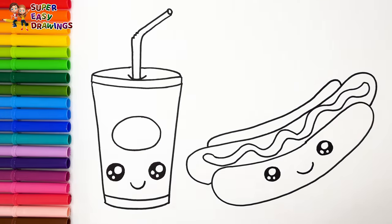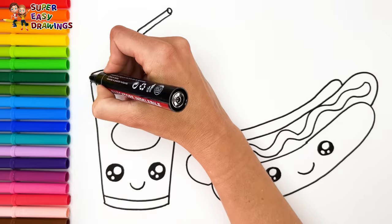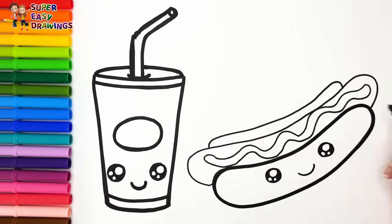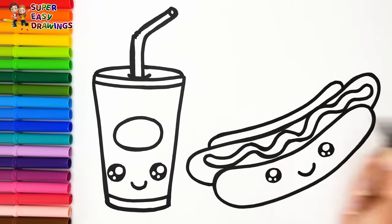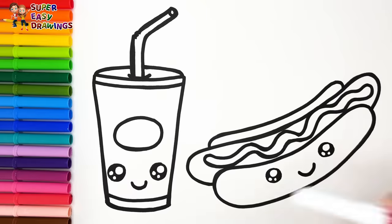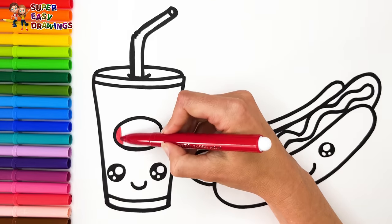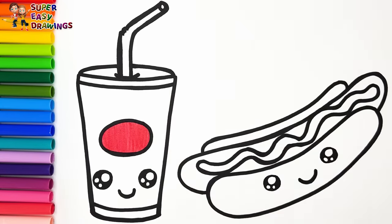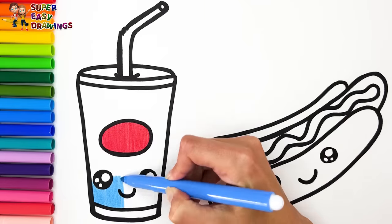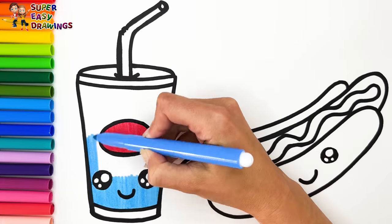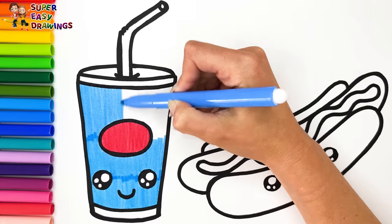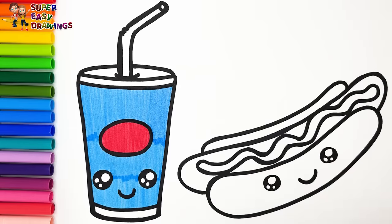Now I'm going to use this black marker to make this beautiful drawing more visible. Let's start coloring. I colored the logo with this red marker. I colored the paper cup with light blue. How cute!